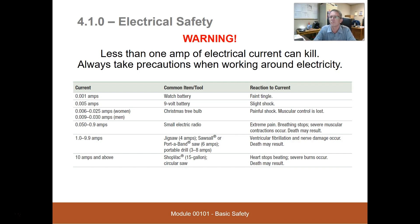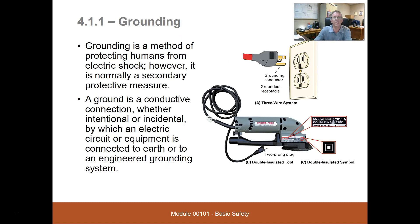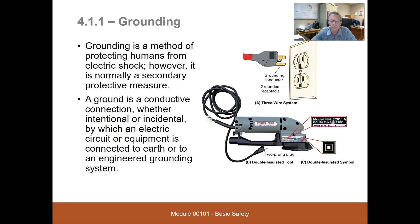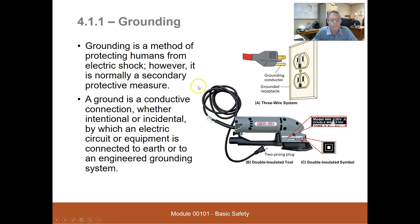Grounding is described as a method of protecting humans from electrical shock, but it is normally a secondary protective measure. A ground is the conductive connection — intentional or accidental — by which an electric circuit or equipment is connected to the earth or to an engineered grounding system. A three-wire cord has one wire for hot, one for the grounded conductor, and one for the grounding conductor, which connects back to the panel, down a grounding electrode conductor, to a grounding electrode, and into the earth.